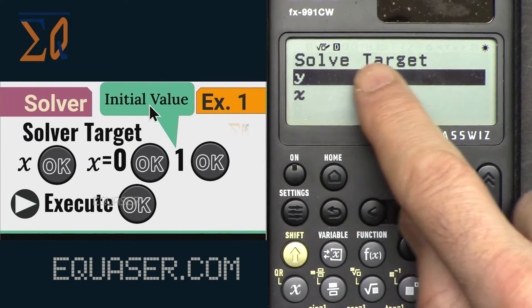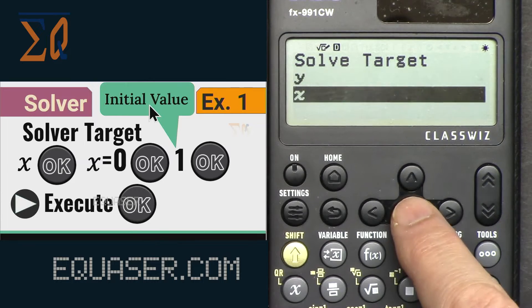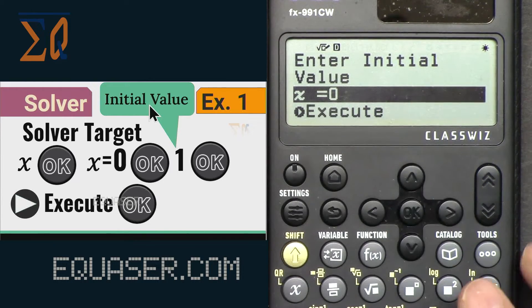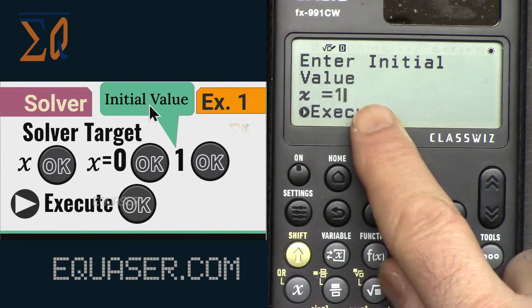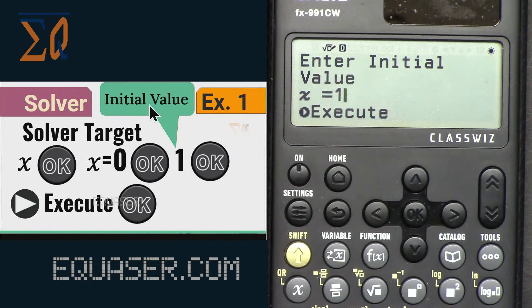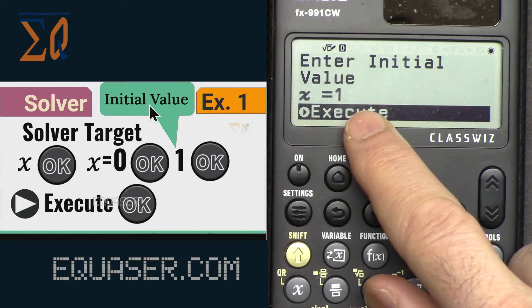We have to select x and then on the next screen it asks you for the initial value. Press this and enter 1 for initial value, and then when I press equal it comes to execute.